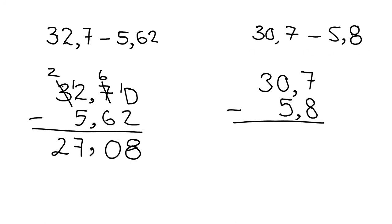The second example: 30.7 minus 5.8. Again we line it up nicely with the decimal points, and straight away we put the decimal point in the answer.